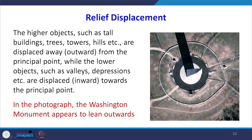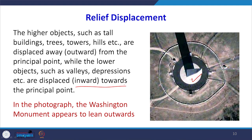In the photograph, a taller object — it could be a building, a tower, a hill — will be displaced away from the principal point; they will be displaced outward. Whereas points situated at lower elevations, depressions, and valleys will be displaced inward toward the principal point. So if we see whether the point is displaced inward or outward, we can determine whether the point is at a higher altitude or situated in a valley.